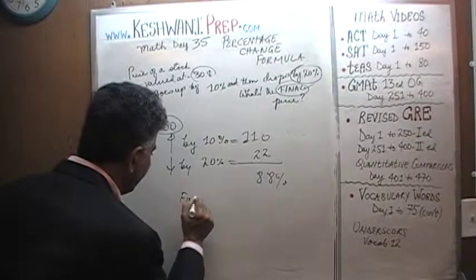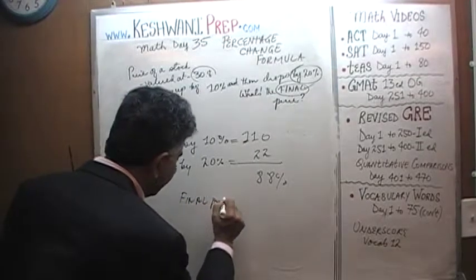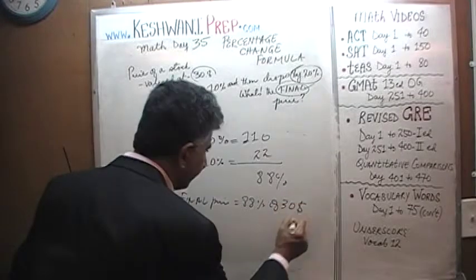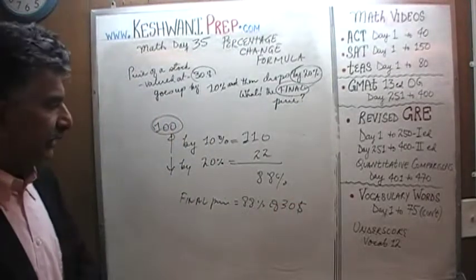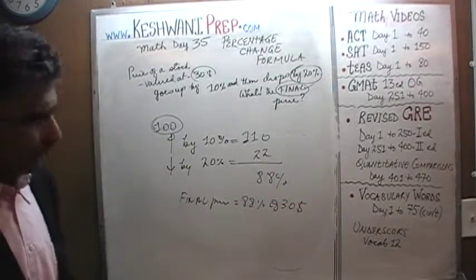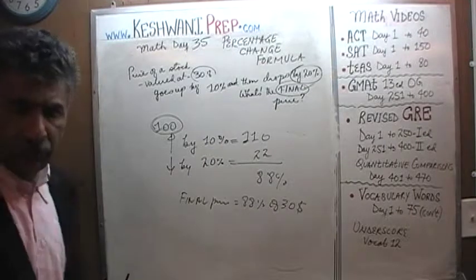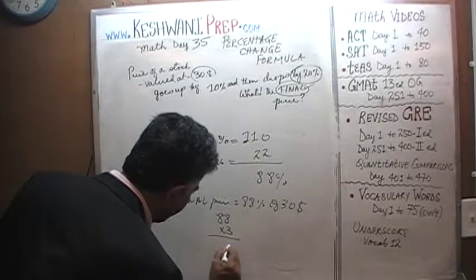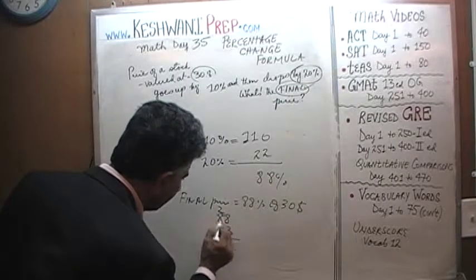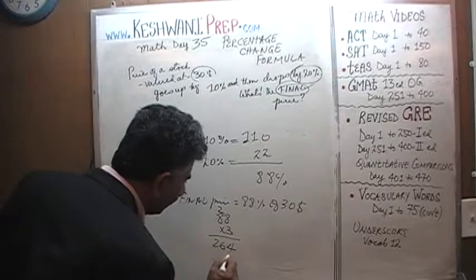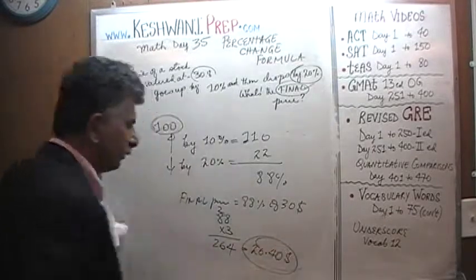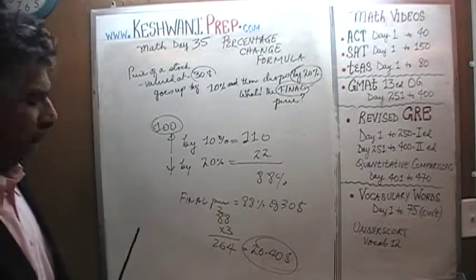The answer is, the final price in this scenario is 88% of $30. That's all. 88% of $30, whatever that works out to be. Let's do the next one. Even this part is very simple. You simply take your 88 and multiply it by 3 and you will have 24 to 2 and another 24 and 26. The final price is going to be $26.40. Let's do one more.